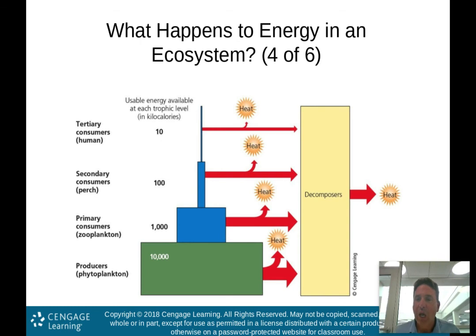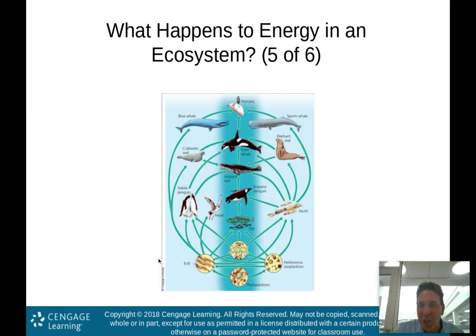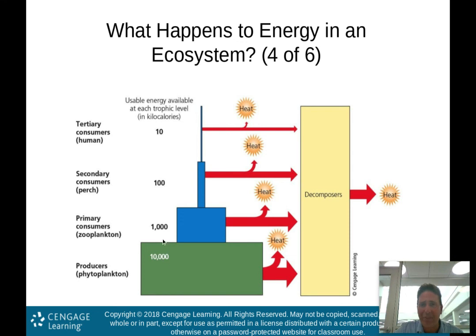What does that mean? This goes back to the ecological footprint activity at the beginning of this chapter. Those who ate a lot of meat had a high ecological footprint. Those who eat a lot of vegetables have a lower ecological footprint. You need to eat less vegetables to get the same amount of calories you'd need from eating beef — because beef would be at the primary consumer level.